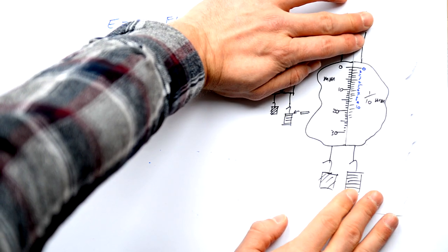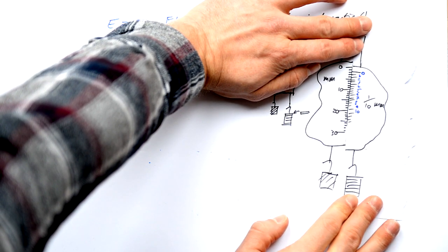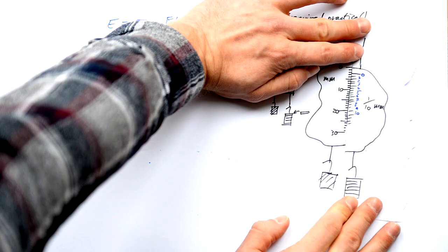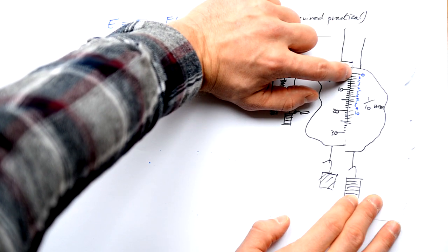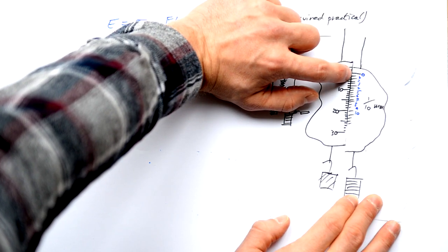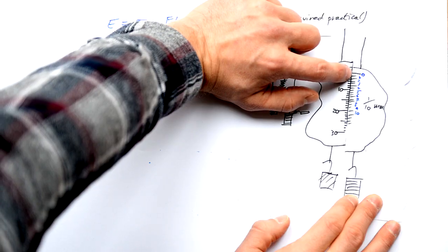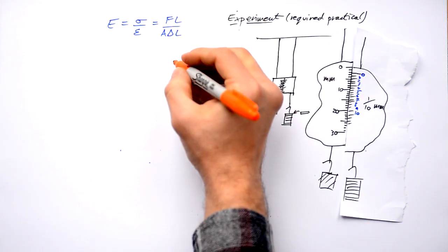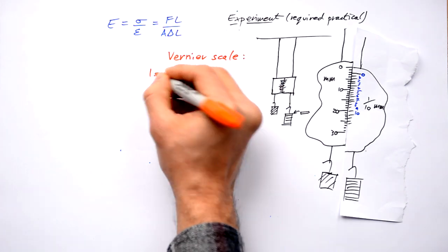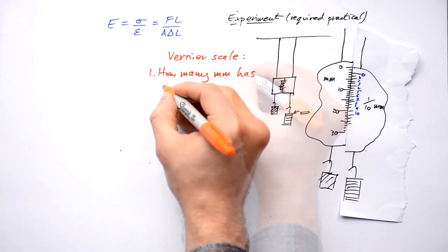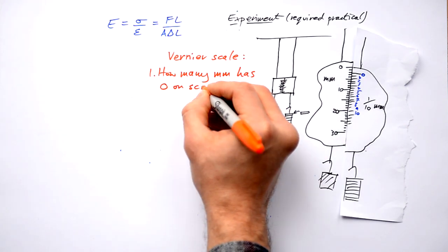As I add masses to this wire here, it's going to move this half of the vernier scale down past the other one. First thing we need to do is see how many millimeters this zero point on this half of the vernier scale has gone down. So to read a vernier scale, step one: how many millimeters has zero on scale moved?